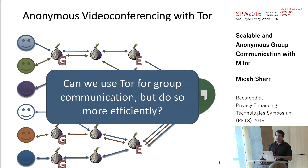In this work, we looked at: can we still use Tor, maybe with some modifications, leveraging its existing user base and infrastructure, to do group communication in a way that can be done more efficiently?